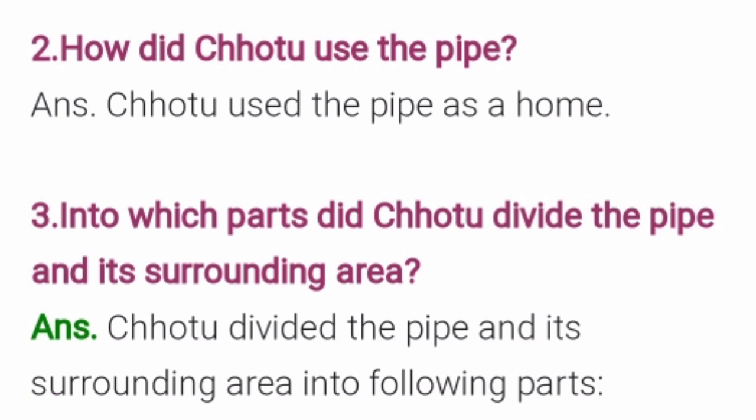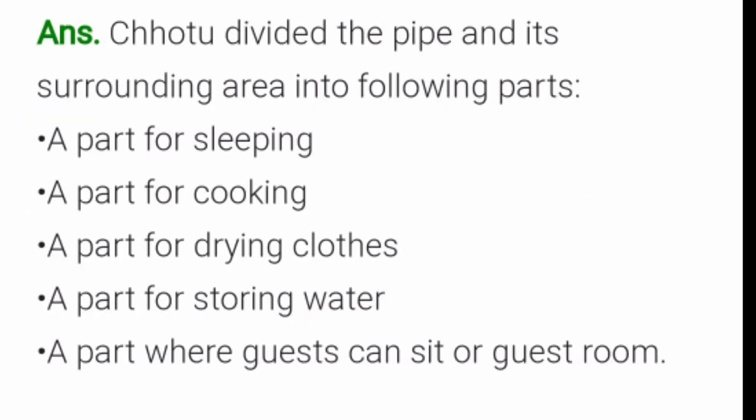Third question: Into which parts did Chotu divide the pipe and its surrounding area? The answer is Chotu divided the pipe and its surrounding area into the following parts: a part for sleeping, a part for cooking, a part for drying clothes, a part for storing water, and a part where guests can sit — a guest room.